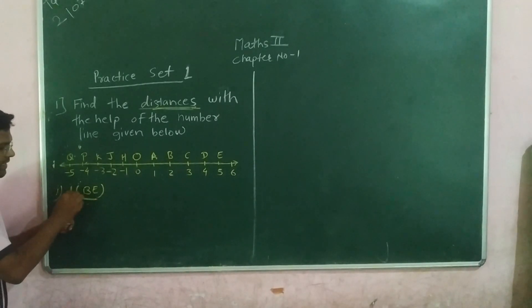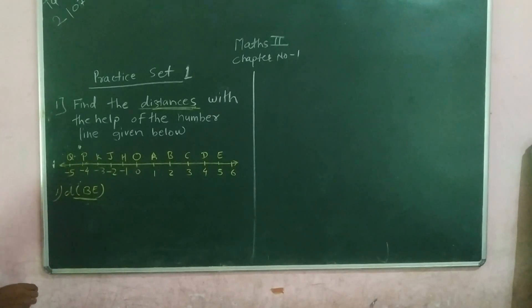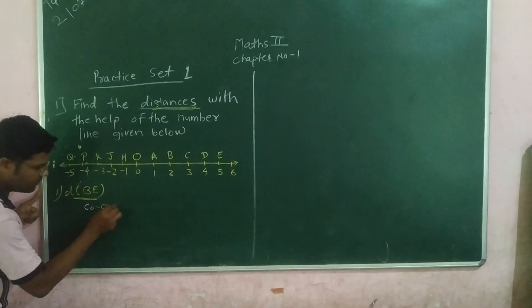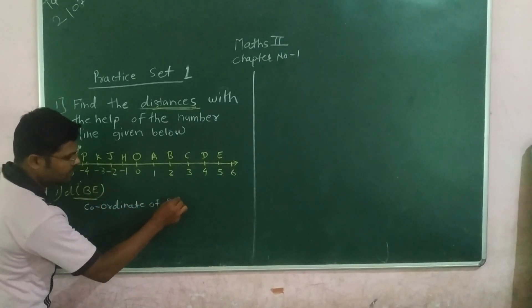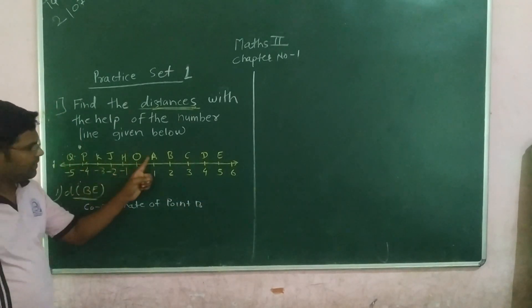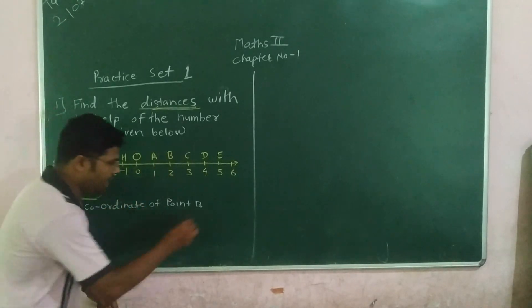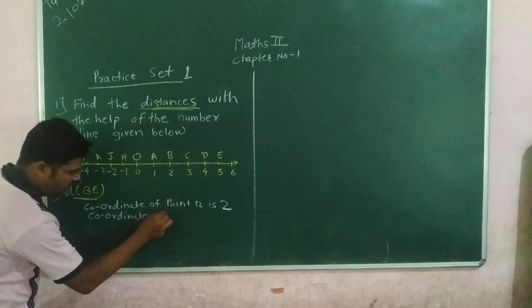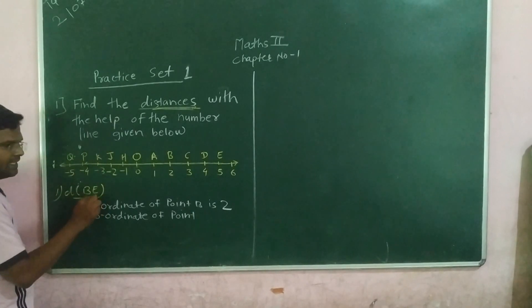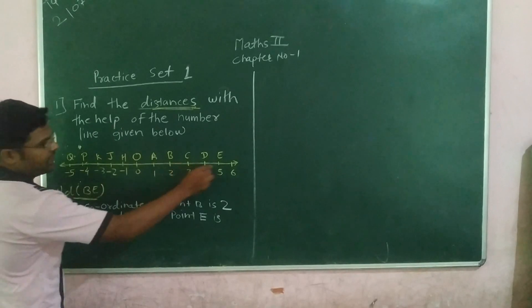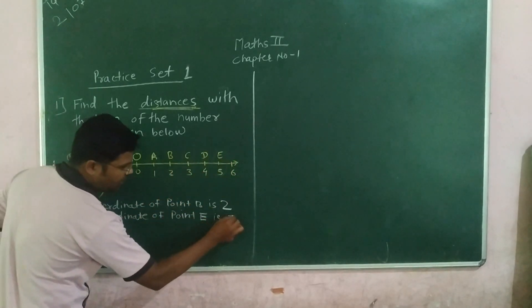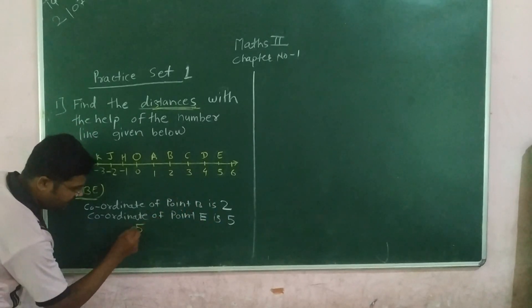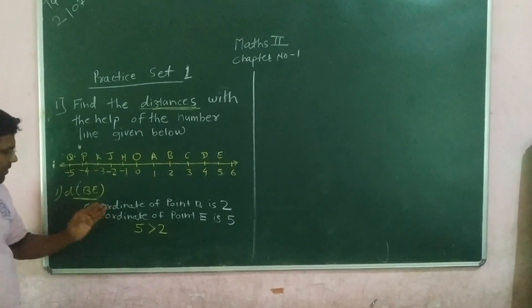The first sub-question is: distance BE. So how do we find distance BE? First of all, write the coordinate of both points B and E. The coordinate of point B is positive 2, so write 2. The coordinate of point E is positive 5, so write 5. Now compare these two coordinates: 2 and 5. Since 5 is greater than 2, write 5 is greater than 2. Using the formula, we can find distance BE.